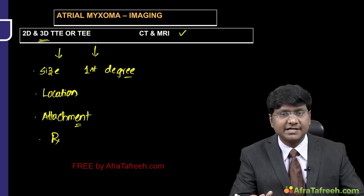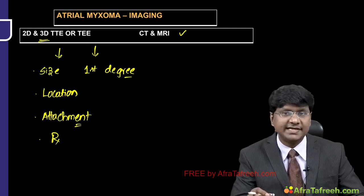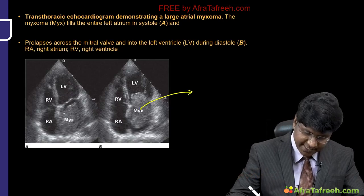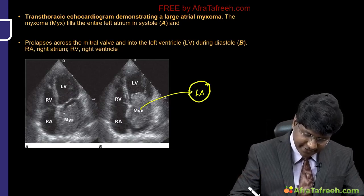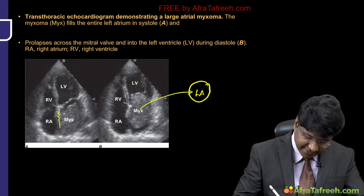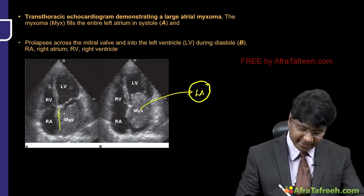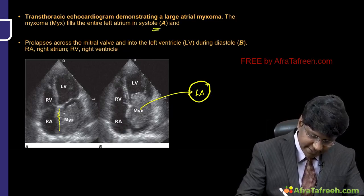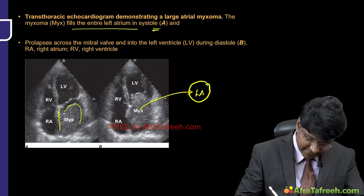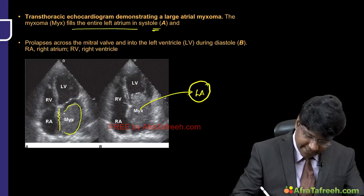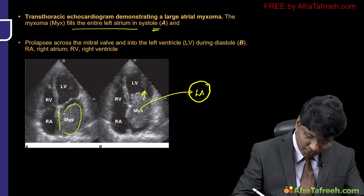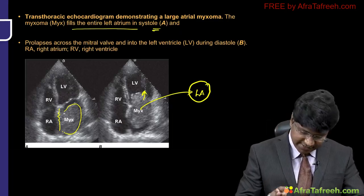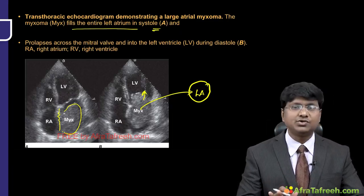CT and MRA provide definitive measurement of size, shape, composition, and surface of the tumor and determine any extracardiac involvement. An example 2D echo image shows an atrial myxoma within the left atrium originating from the interatrial septum — filling the entire left atrium in systole and prolapsing onto the mitral valve, giving a picture of mitral stenosis.